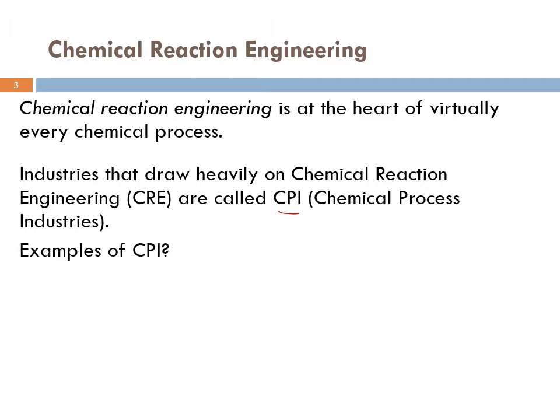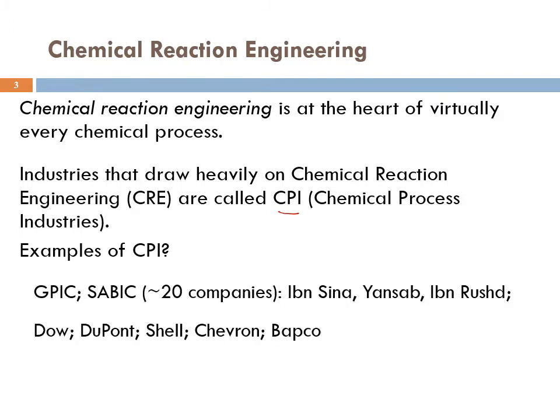Some examples of CPI: we have GPIC, where they manufacture methanol, urea, and ammonia — it's a chemical process industry.